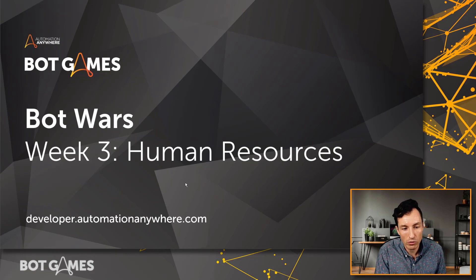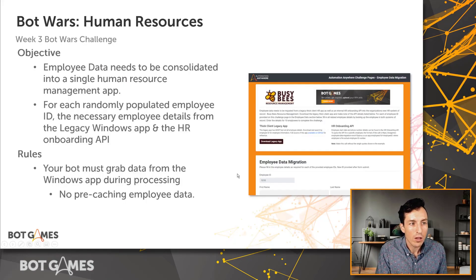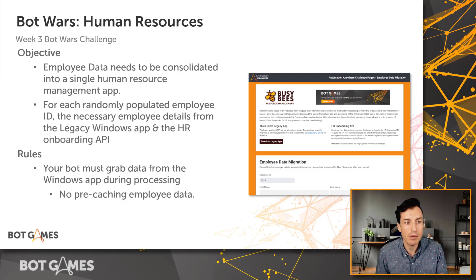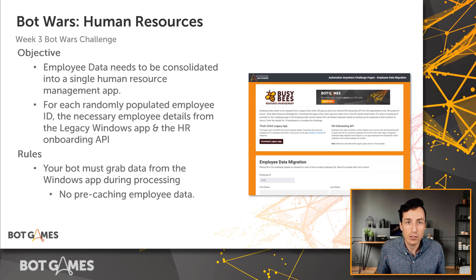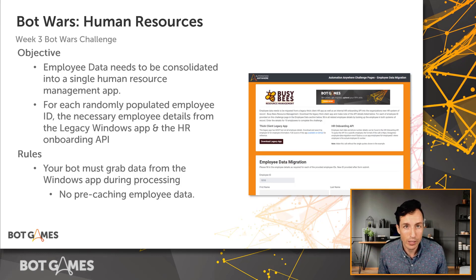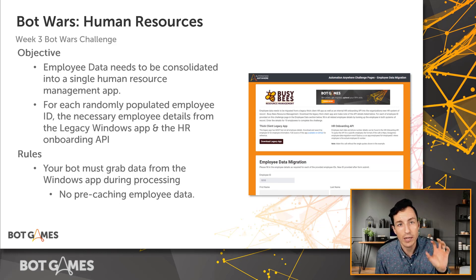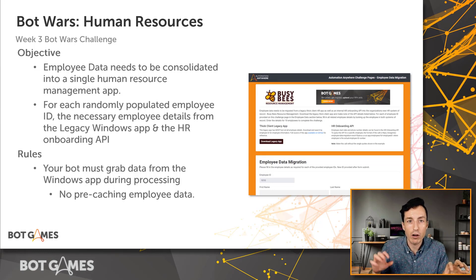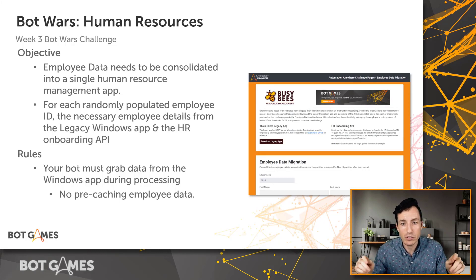Human Resources is a very common bot type that we see a lot of organizations creating, so let's jump right into this. Our objective for this week is that we have a new HR management application called Busy Bees, and employee data must be consolidated from two different locations to have that one application be the single source of truth. We're going to have a Windows thick client app where we need to enter an employee ID, do a lookup to grab the data, and we also have an HR onboarding API — we need to grab data from both locations and fill out the Busy Bees application.